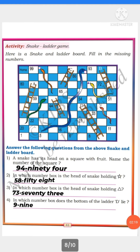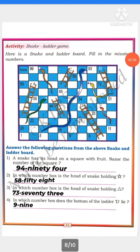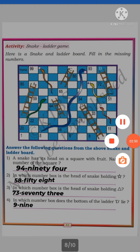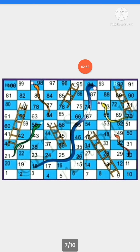Next activity: Snake and ladder game. Here is a snake and ladder board — fill in the missing numbers. Students, here we have a picture of snake and ladder. They have given only some numbers and we should fill the missing numbers. They have given numbers like 1, 3, 6, 8, 11, 16, 20, and so on. First, you have to complete this table.